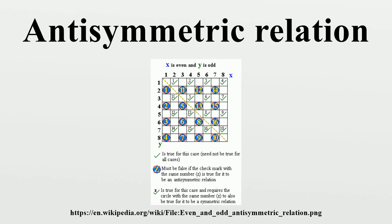More formally, R is antisymmetric precisely if for all a and b in X, if a R b and b R a, then a equals b. Or equivalently, if a is not equal to b, then b R a must not hold.